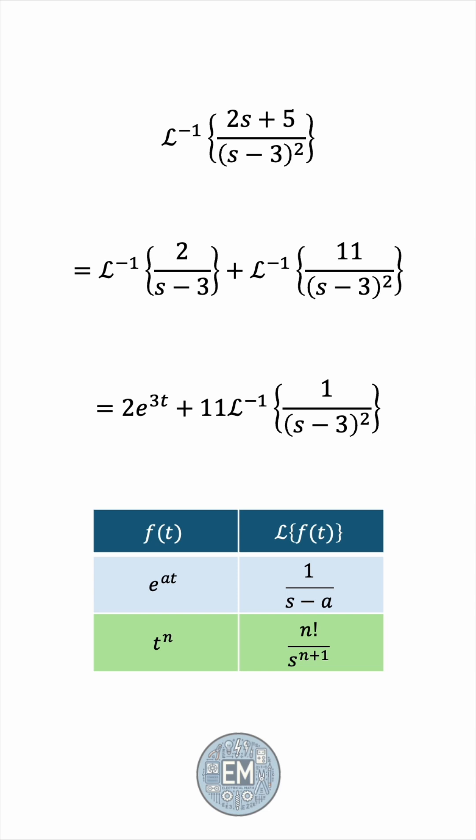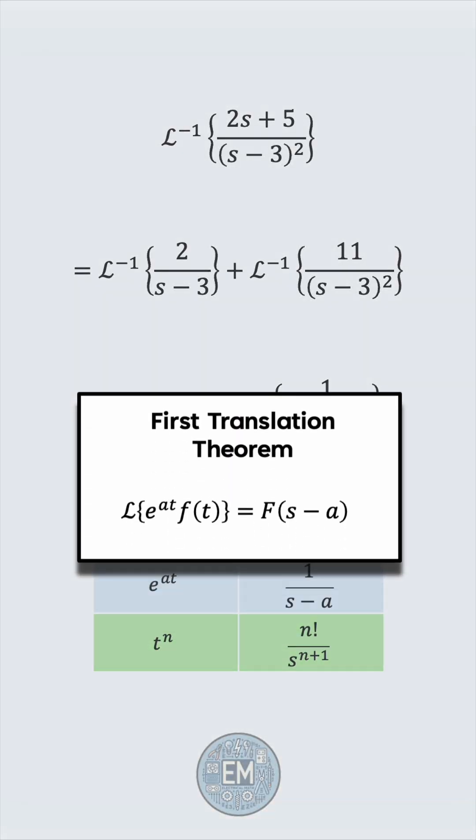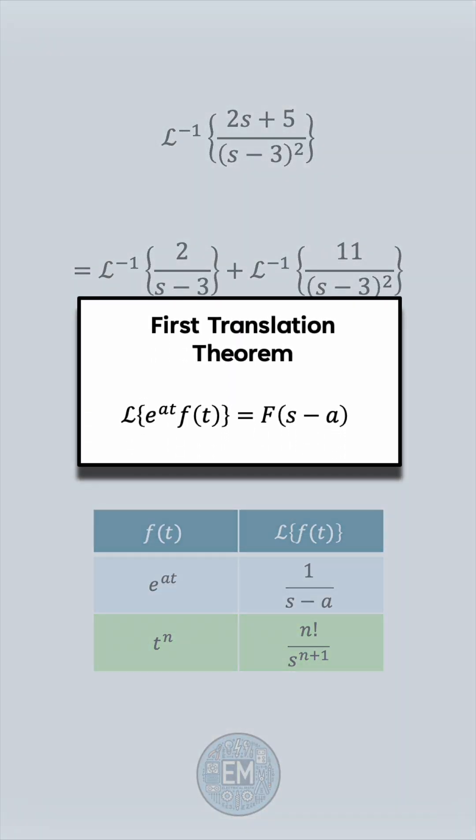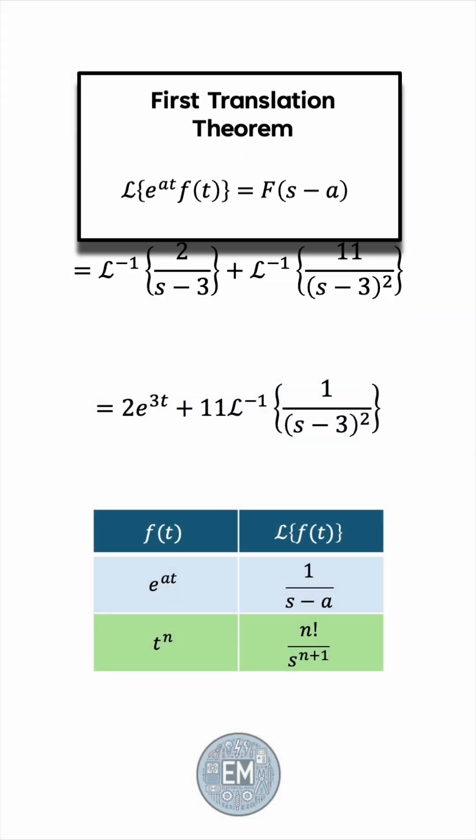But we have a shift in the s domain, a shift of 3 units. The first translation theorem tells us that this shift corresponds to a multiplication by an exponential in time. In our case, a is equal to 3. So we'll account for this shift by a multiplication in time by e to the 3t.